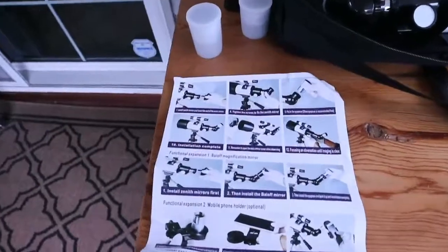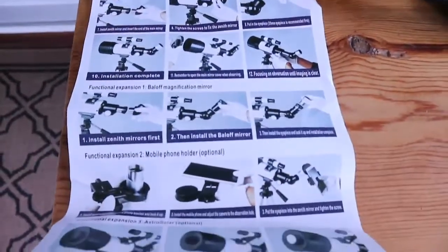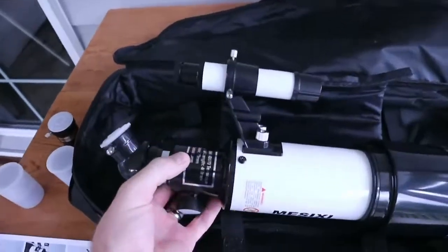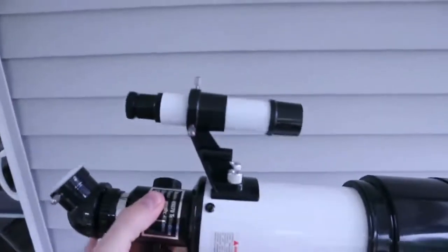So the instructions are pretty clear. We've got one piece of paper, double-sided, color images. Very simple. Then again, it's really simple to assemble. There aren't a lot of pieces that you actually have to put on there.